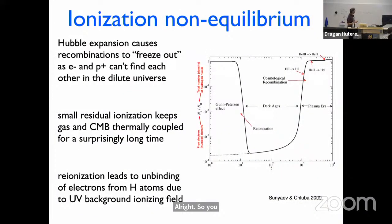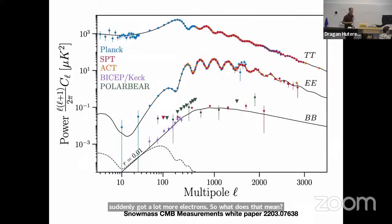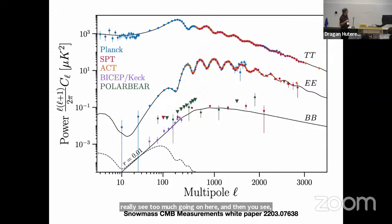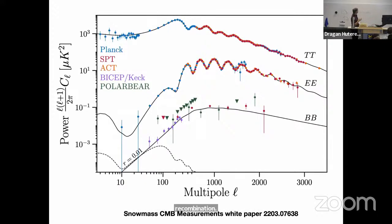Just to review — having given the talk yesterday, it's easy to grab the slides. The number of electrons drops precipitously and then decays. But then notice that at whatever redshift just below 10, we suddenly got a lot more electrons. That means if you look at the CMB power spectrum — there's the temperature — you see bumps and wiggles. But what you don't notice is that this one bump is totally different from all the others. These are coming from the acoustic oscillations at recombination, whereas this big one is coming from rescattered radiation after the universe was reionized.